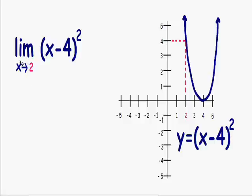So since we want to find the limit as x approaches 2 of (x - 4)², I'm going to plug in a 2 for x. So instead of (x - 4)², we have (2 - 4)². 2 minus 4 is negative 2. Negative 2 squared is just negative 2 times negative 2, which gives us a positive 4.